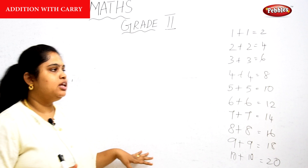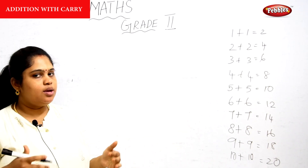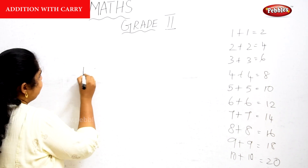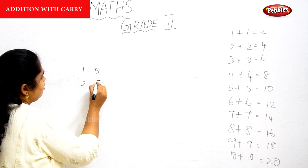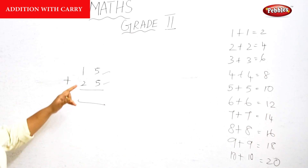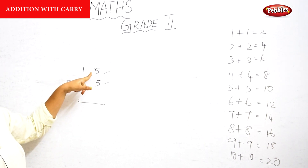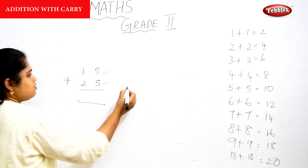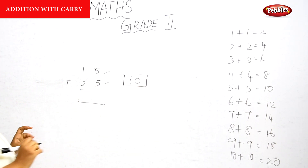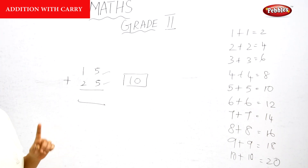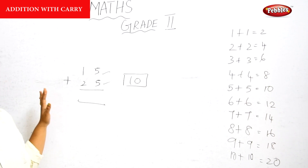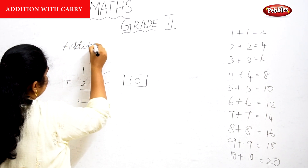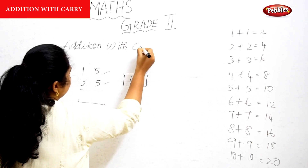So you have to be very clear about the same number additions. The reason I am saying this is, for example, if you have a question like 15 plus 25 — see here, on the upper side you have a 5, and on the down side you also have a 5. So 5 plus 5 is 10, isn't it? In the previous exercise, we saw only one-digit number addition. This is a carry addition — addition with carry.